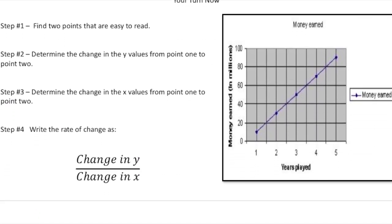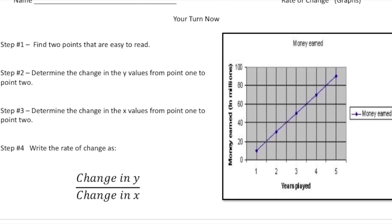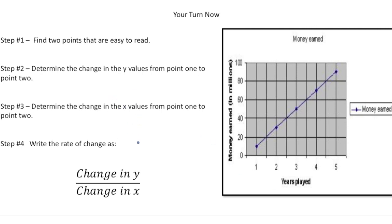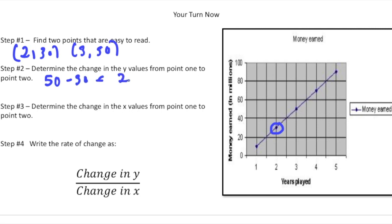For the last one, we have a graph about money earned where the X axis is years played and the Y axis is money earned in millions. Step one: find two easy-to-read points — (2, 30) and (3, 50). Step two: change in Y is 50 minus 30, which is 20. Step three: change in X is 3 minus 2, which is 1. Step four: the rate of change is 20 over 1 — the player earns 20 million dollars for every one year of playing. How did you do?